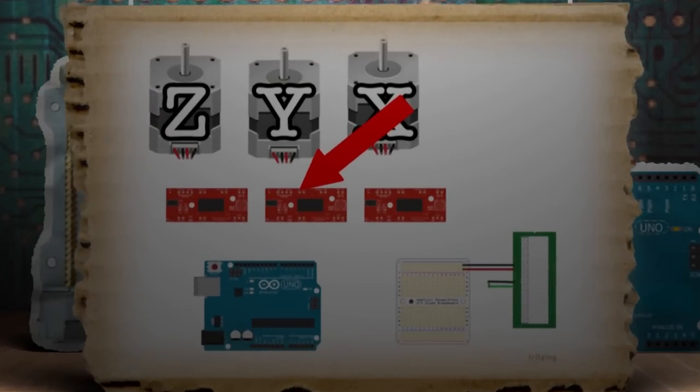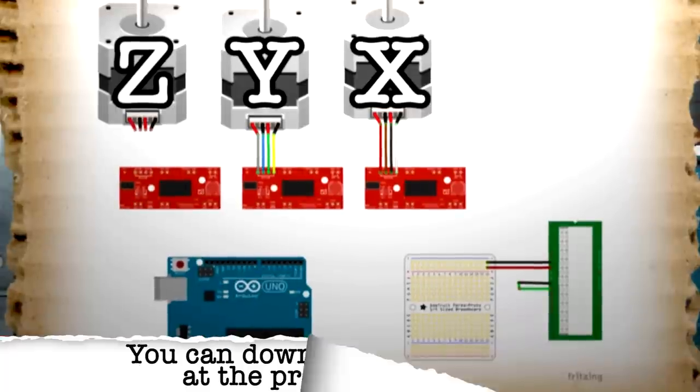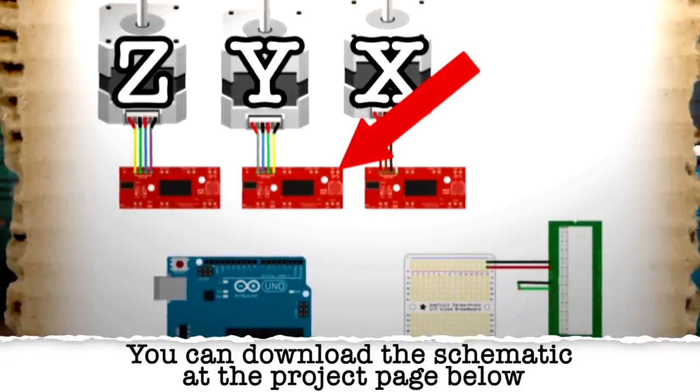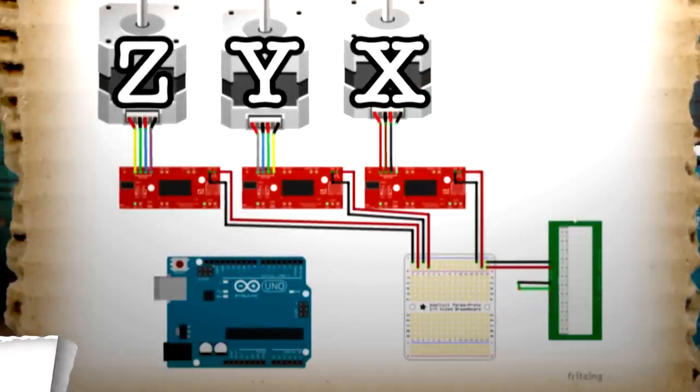These pins are the ones that go to the motor wires directly, and then these two pins are for power and ground wires, and we'll take a look at that later.